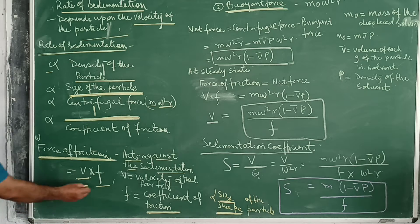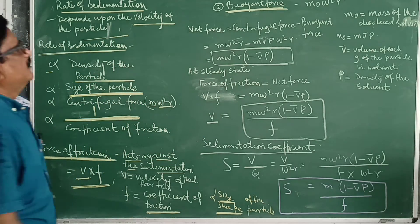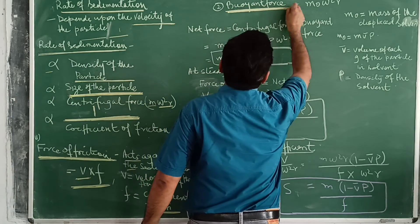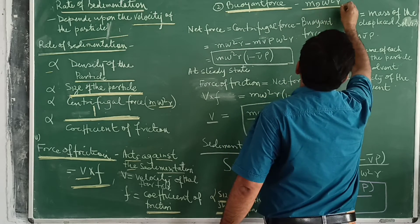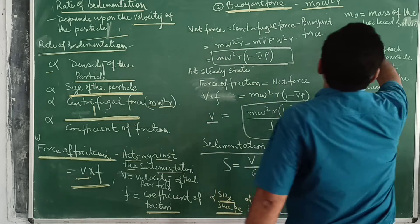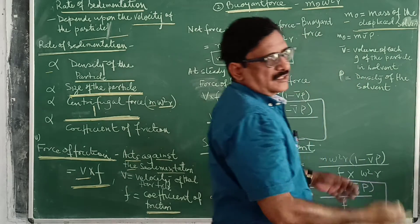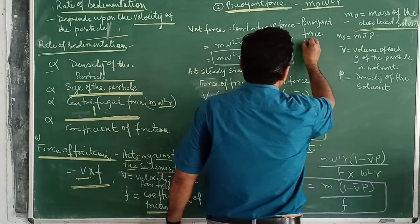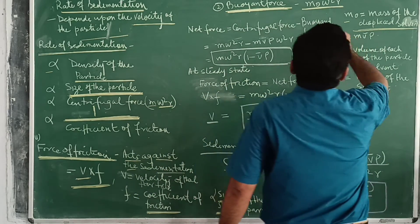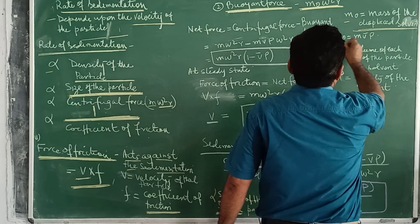There are two forces which oppose sedimentation: the force of friction and the buoyant force. The force of friction opposes sedimentation, and the buoyant force is equal to m₀·ω²·r, where m₀ is the mass of the displaced solvent. This is explained by Archimedes' principle — the buoyancy force.